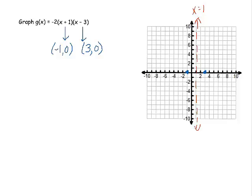We're almost done. We just need to know where is the vertex. And we know the vertex is on that red dotted line. Let's find it. To find it, I'm going to substitute 1 in for x.